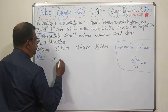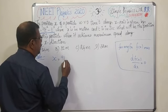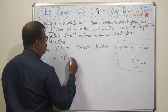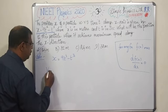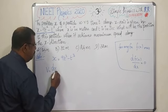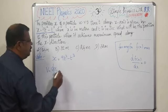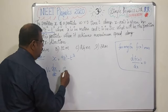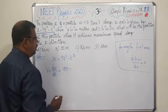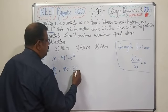x equals 9t squared minus t cubed. Velocity v equals dx by dt equals 18t minus 3t squared.